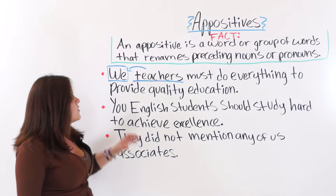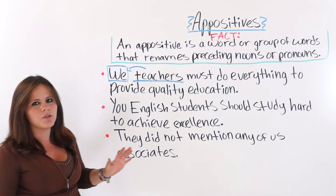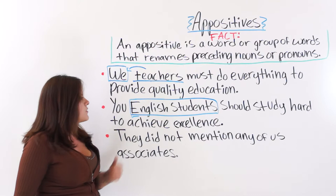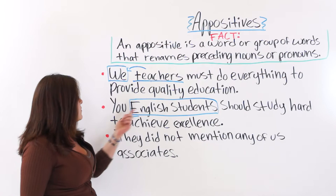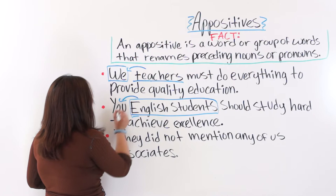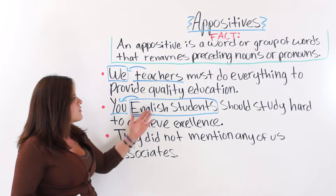To decide which kind of pronoun to use before the appositive, you must forget about the appositive for a second. For example, let's pretend the appositive is not there: 'You should study hard to achieve your excellence.' So if we ignore the appositive completely, we know we must use the personal pronoun 'you.' Therefore: 'You English students should study hard.' Here, 'English students' renames the personal pronoun 'you.'